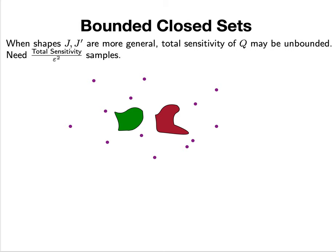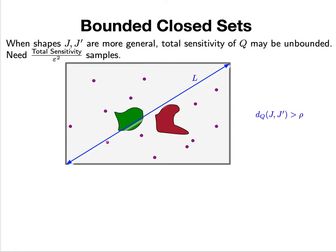Now we're considering two shapes, the red one and the green one, J and J'. Unfortunately, if they're not something nice like a half-plane, the total sensitivity may be unbounded.